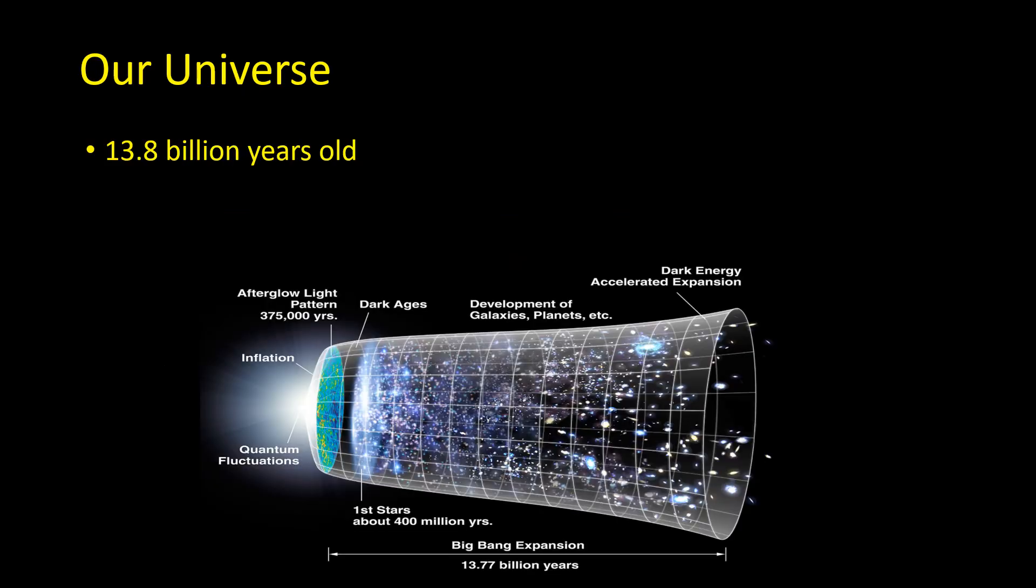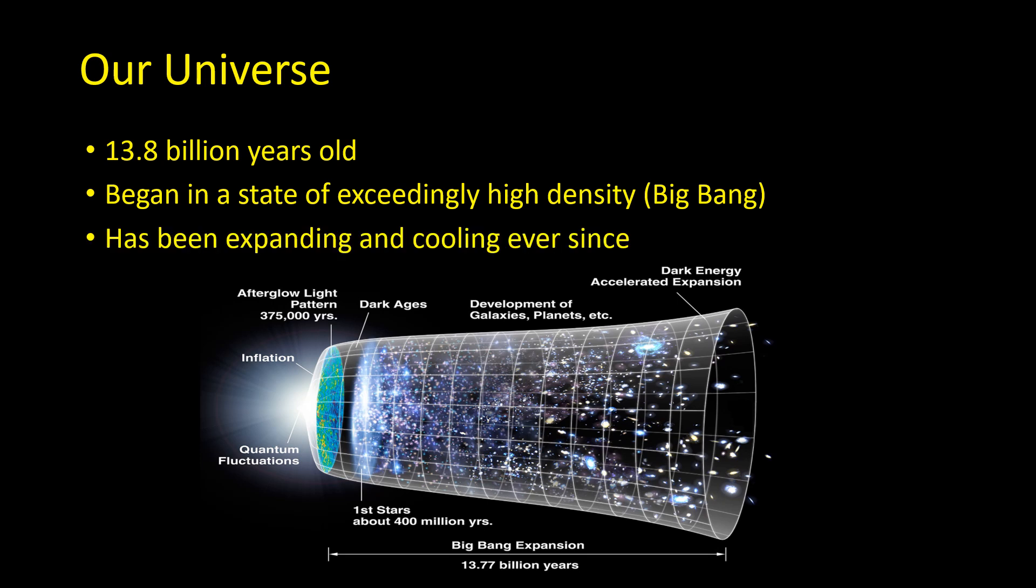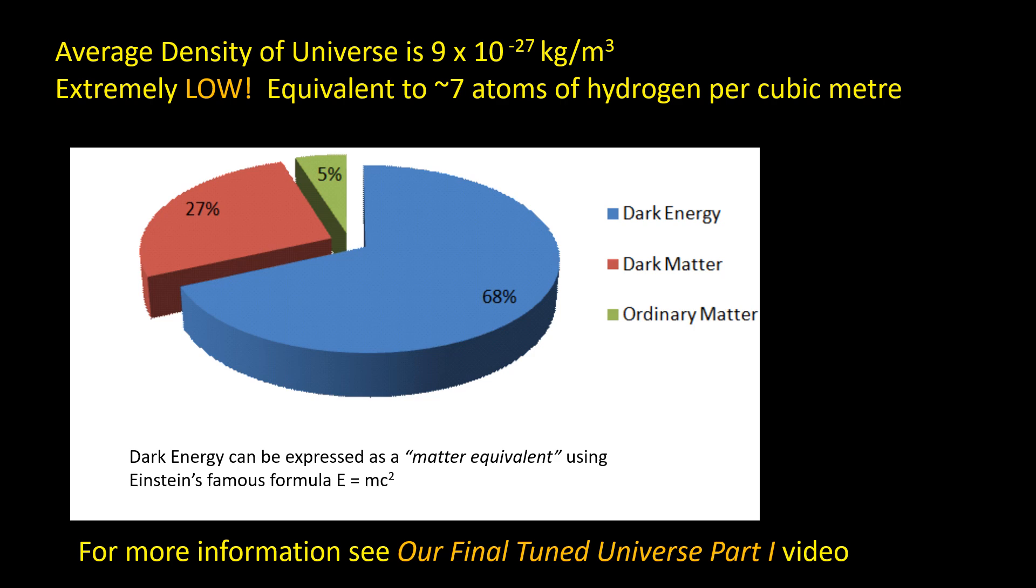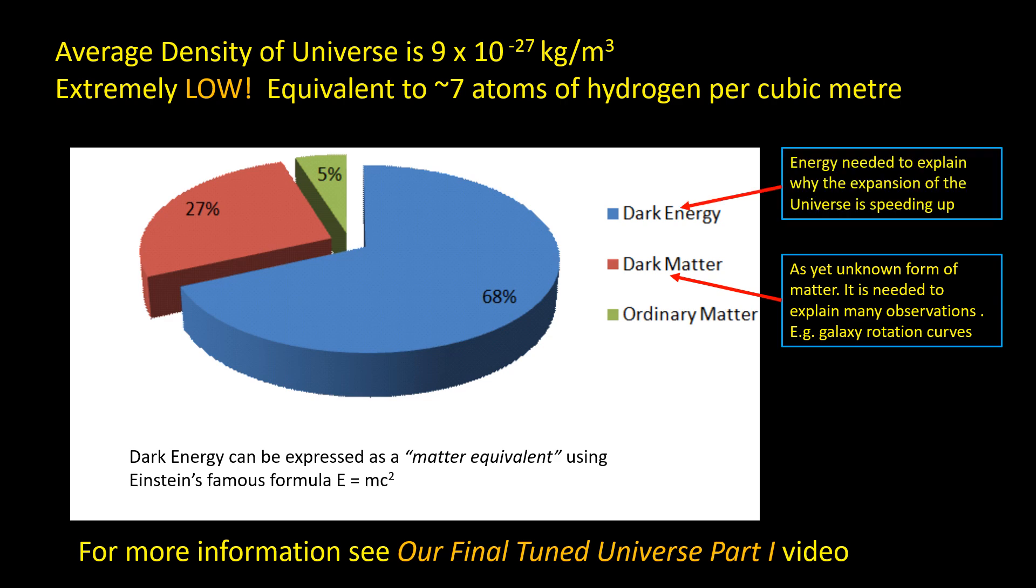We believe our universe is 13.8 billion years old. It began in a state of exceedingly high density which we call the Big Bang and it's been expanding and cooling ever since. Stretched out, the universe has an incredibly low density equivalent to only seven atoms of hydrogen per cubic meter. Only five percent is in the form of normal matter. The remainder of the matter is dark matter, but the biggest contribution is something called dark energy, an unknown form of energy which explains why the expansion of the universe is speeding up.